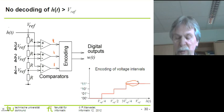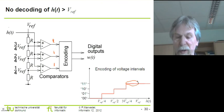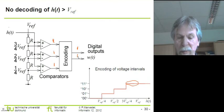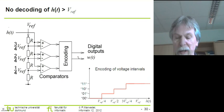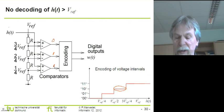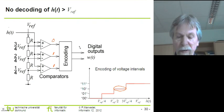Whenever we are in that range of values for our input signal, we generate the corresponding output signal. Using this little encoder, we would typically convert that to the largest digital value that we can represent. Now let's assume the input voltage H of T is somewhat smaller — somewhere between three quarters and two quarters of the reference voltage. Then this comparator would generate a zero, the next one a one, and the one below also a one, and the encoder generates the second largest digital value.